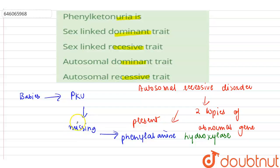It is needed to break down the essential amino acid phenylalanine. Without the enzyme, levels of phenylalanine build up in the body. So phenylketonuria is an autosomal recessive trait. It is not autosomal dominant and not a sex-linked disease.